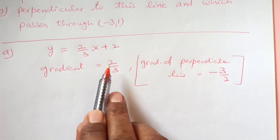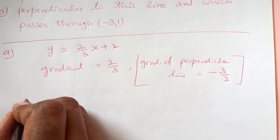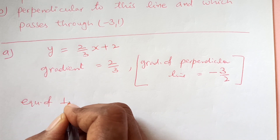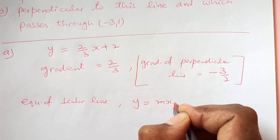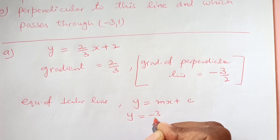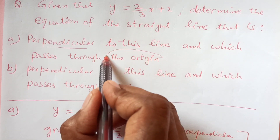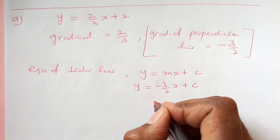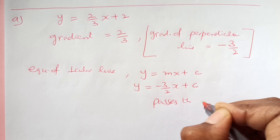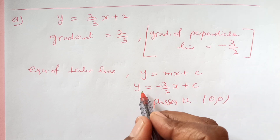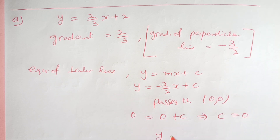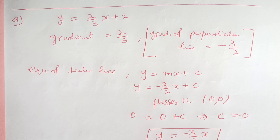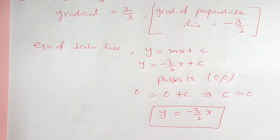We swap the numerator and denominator to get the reciprocal. The equation of the perpendicular line is y equals mx plus c, so y equals negative 3 over 2 x plus c. Now, this line passes through the origin, that is (0, 0). When x is 0, y is also 0, so 0 equals 0 plus c, meaning c is 0. Therefore the equation of the perpendicular line is y equals negative 3 over 2 x.